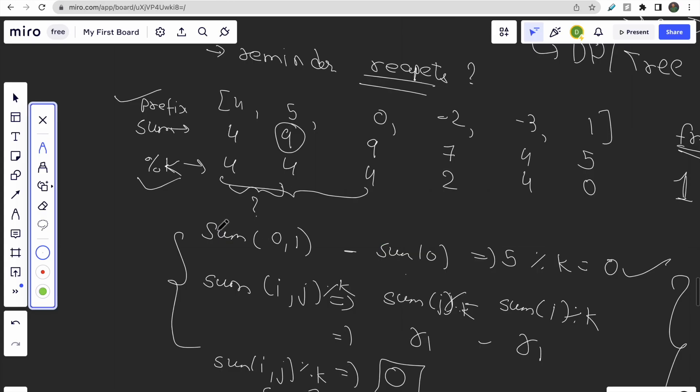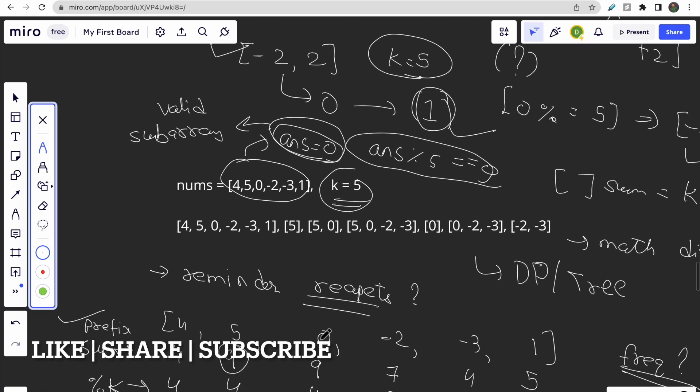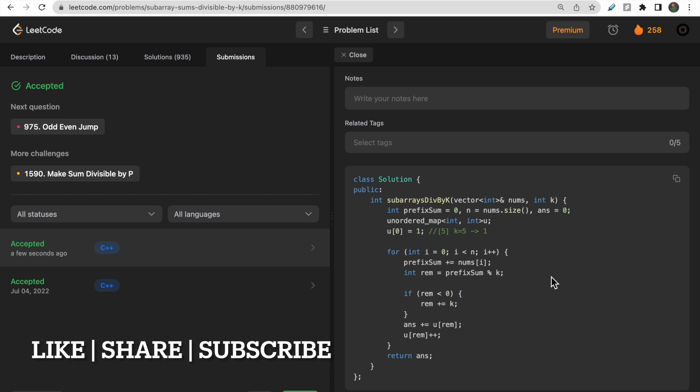And I hope you guys understood how this approach will work. Because the remainder becomes 0, based on this approach, we are solving this question. So that's all for this video. Make sure you like the video and subscribe to our channel. And if you have still any doubts for this question, then do let me know in the comment section. Thank you.